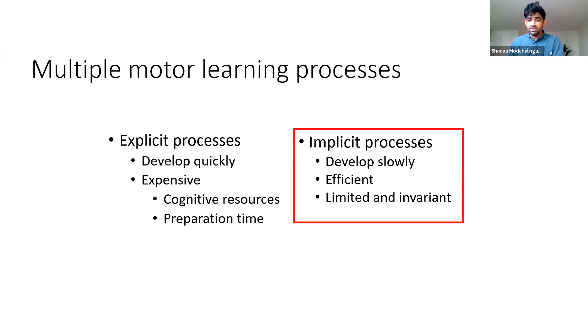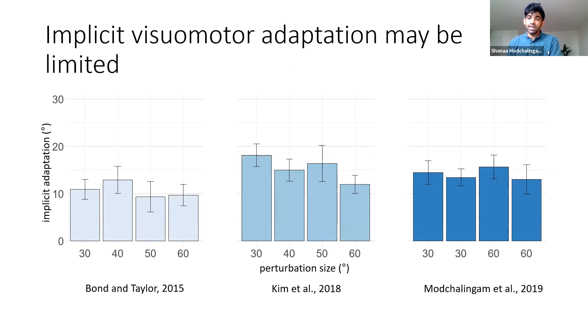So what do I mean by limited and invariant? A few studies in the past have looked at the amount of implicit adaptation that can occur when adapting to visual motor rotations of various sizes. You can see here on the x-axis we have a bunch of different perturbation sizes in various studies ranging from 30 to 60 degrees in all studies. But you can see that when implicit adaptation is measured in the y-axis, they're all very similar. Whether people adapt to a 30 or 60 degree rotation, implicit adaptation seems to stay around this 10 to 20 degree mark. There is some differences between studies, but within one setup they seem to be fairly invariant. Regardless of the perturbation size you have a similar amount of implicit adaptation.